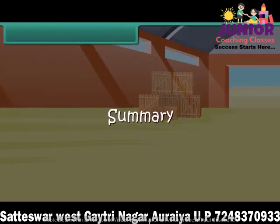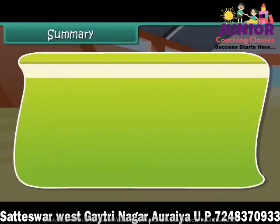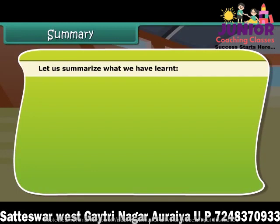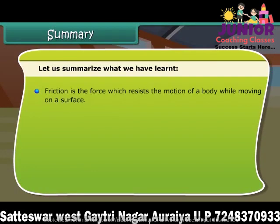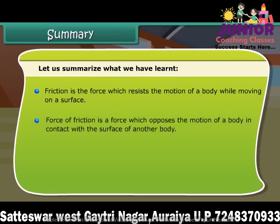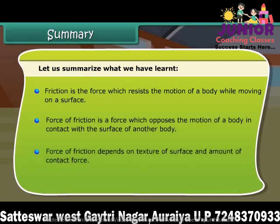To summarize: friction is a force which opposes the motion of a body in contact with the surface of another body. It is the force which resists the motion of a body while moving on a surface. The force of friction depends on the texture of the surface and the amount of contact force between the two surfaces.